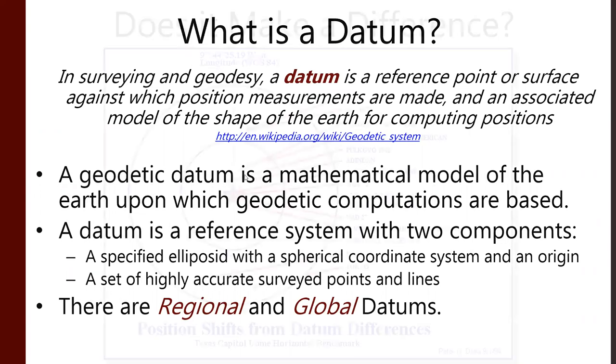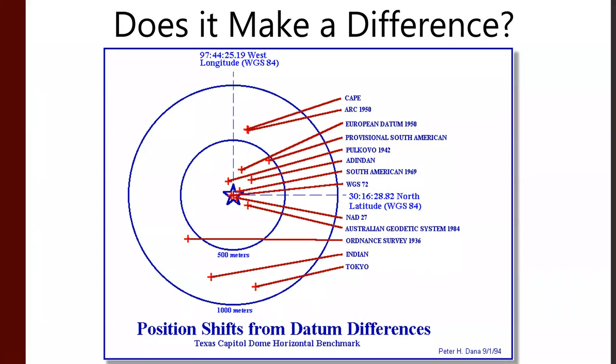Now, there are lots of datums and lots of different components. Here is an example of some. We can see our lat-long of the point we're looking at here, the Texas Capitol Dome. Longitude, latitude, XY. Note the little parenthesis, WGS84.